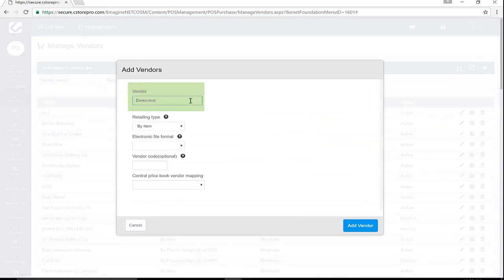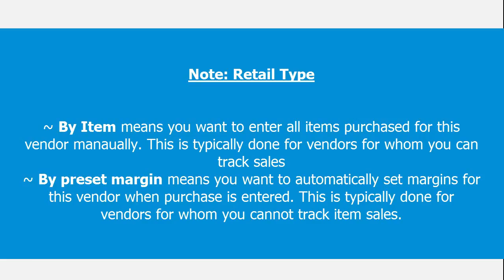Enter Vendor Name and Retail Type. By Item means you want to enter all items purchased for this vendor manually. This is typically done for vendors for whom you can track sales.